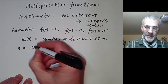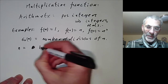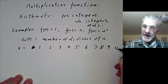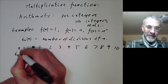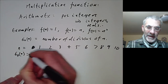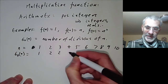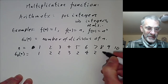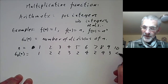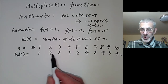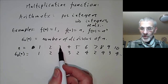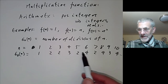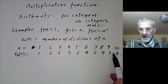For n = 1, 2, 3, 4, 5, 6, 7, 8, 9, 10, sigma_0 of n is 1, 2, 2, 3, 2, 4, 2, 4, 3, 4 and so on. You can see it's 2 whenever n is prime, and otherwise it seems to go up and down a bit randomly.